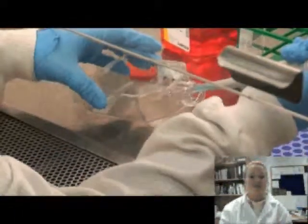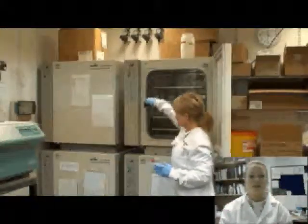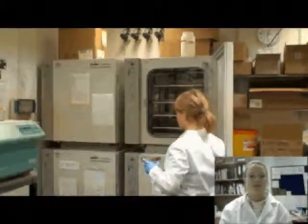I am now aspirating off the PBS and trypsinizing the cells with 1ml of trypsin. I am placing them back in the incubator at 37 degrees for 5 minutes.